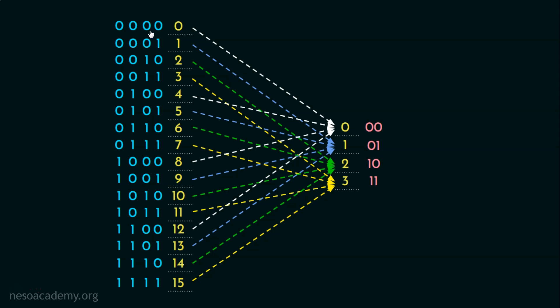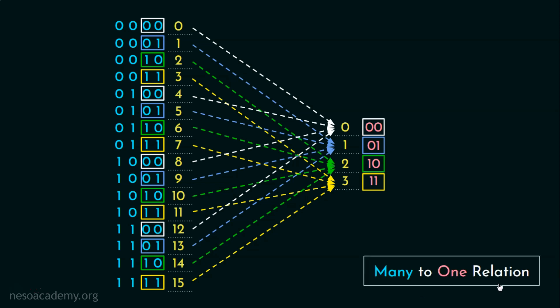If we observe closely, the least significant two bits of the block number is actually dictating which cache line to map onto. Like the block numbers 0, 4, 8, 12, they are going to get mapped onto line number 0. The block numbers 1, 5, 9 and 13 mapped onto line number 1. For blocks 2, 6, 10 and 14, they are going to get mapped onto line number 2. And finally, block number 3, 7, 11 and 15, these are going to get mapped onto line number 3. So, this is a many to one relation.